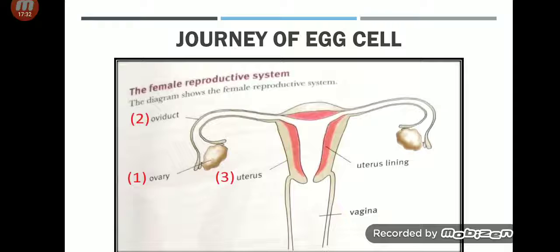Journey of the egg cell: number one, the ovary produces the egg cell. Then it is carried into the oviduct, where fertilization happens and the zygote is formed. Number three, the zygote is implanted on the uterus, and inside the uterus a new baby will be produced. I hope this topic is clear — it is very simple. You just need to know the parts of the human reproductive system, both male and female, and their functions.